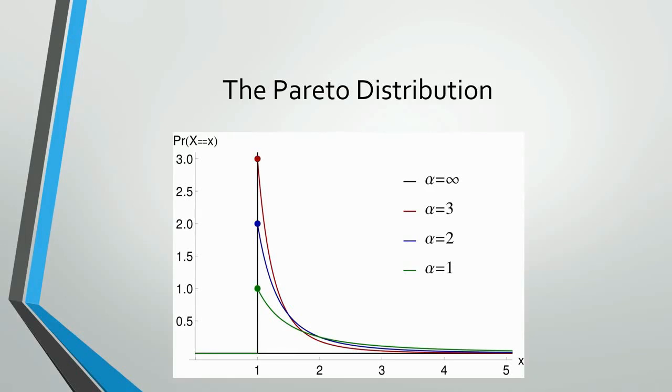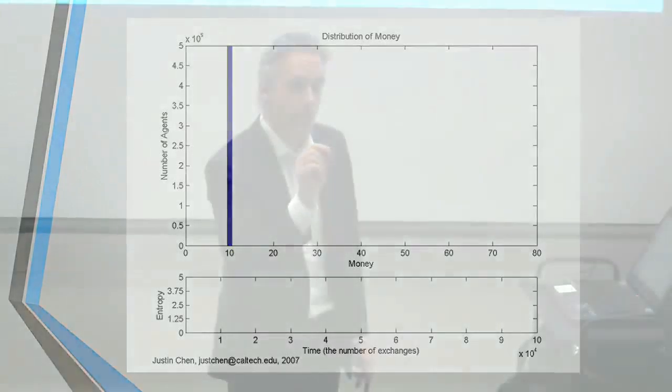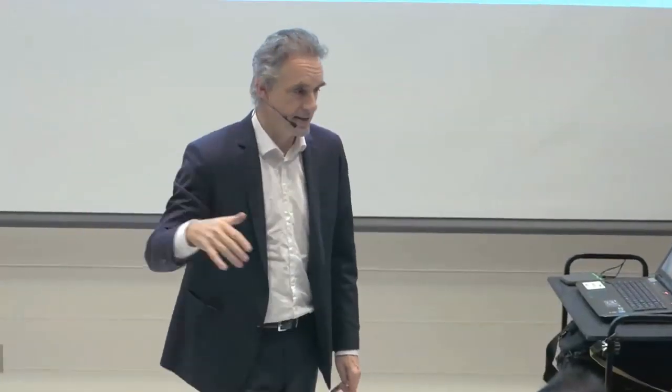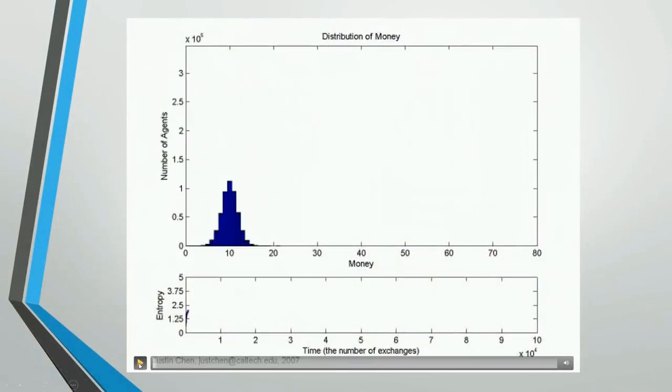I'll just run this simulation for you. This shows you why the Pareto distribution emerges. You have to watch this quickly because it's a fairly fast animation. Here's what happens: everybody starts out with ten dollars. There's a thousand people playing the game. Everybody starts with ten dollars. I have a dollar, you have a dollar. I flip a coin - if I get heads you give me a dollar, if I get tails I give you a dollar. We go around and trade with everyone. The first thing that happens when people start to trade is a normal distribution develops because some people lose and some people win. It's just like the Galton board that I showed you.